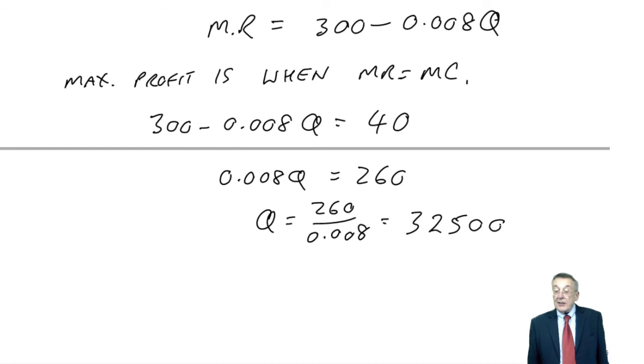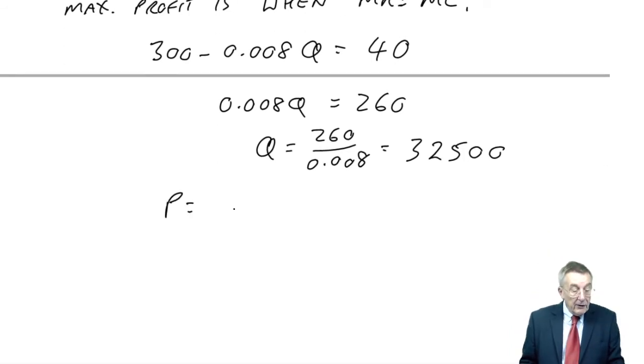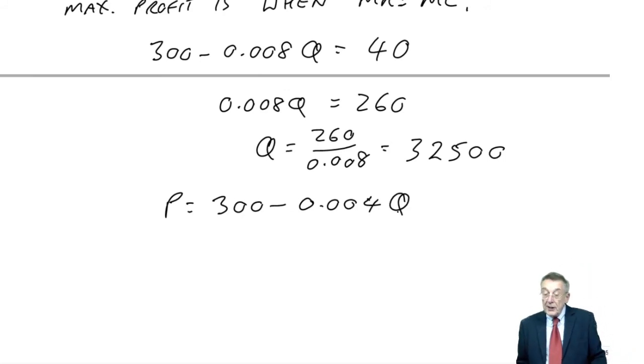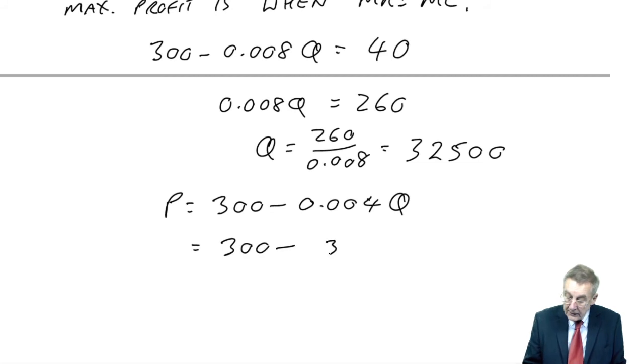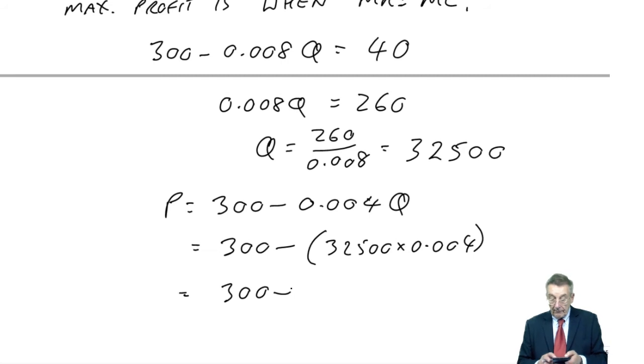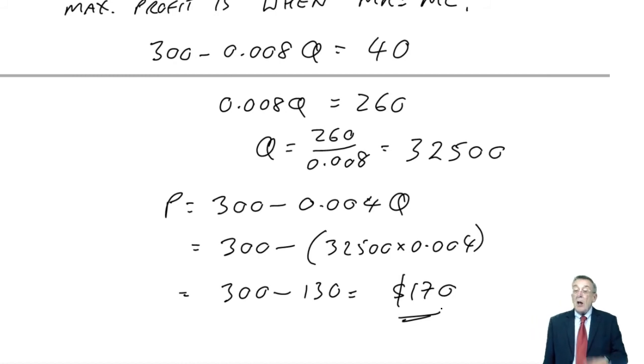However, we've not quite answered it. Maximum profit will be when Q, when the demand is 32,500, but it wants to know what the selling price should be. Of course, we can have any demand we like depending on the selling price we fix. But it's now easy. We know from the question that the price is going to be 300 minus 0.004Q. If Q is 32,500, it's 300 minus 32,500 times 0.004, which is 130, equals 170. If we have a selling price of 170, we'll sell 32,500 units, and that will give us maximum profit.